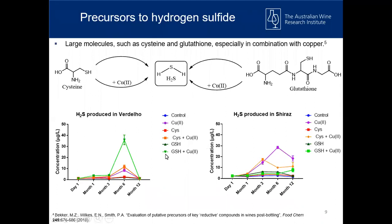The most interesting result was when we added glutathione and copper in combination. Immediately there was a big spike in H2S formation in the verdeo, and in the Shiraz there was also a slight increase, but not as dramatic as in the white wine. When we added glutathione by itself we didn't see any formation, but the combined treatment of glutathione and copper seems to be quite a risk for H2S production. Where we can't easily control our glutathione concentrations, we can control our copper concentration — so just by keeping residual copper concentrations low in your wine, you decrease the risk of H2S formation.